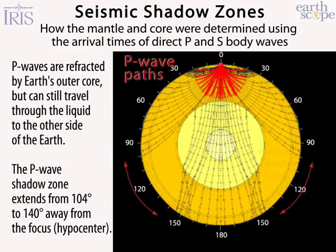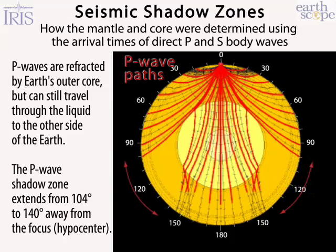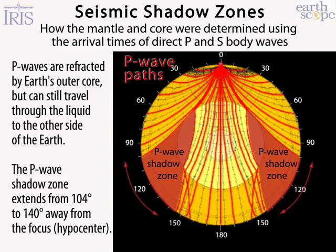An earthquake, depicted here at the top of the globe for convenience, sends compressional P waves in all directions, refracting along boundaries with depth, causing curving paths. At the core-mantle boundary, they are refracted or bent inward and slowed down in the liquid. It's this refraction that causes a shadow zone between the angular distances of 104 to 140 degrees from the earthquake.